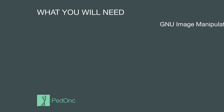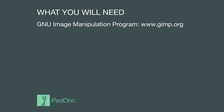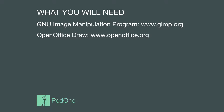We will be using the GNU Image Manipulation Program, which can be downloaded from www.gimp.org. We will also be using OpenOffice Draw, which can be downloaded from www.openoffice.org. OpenOffice Draw is part of the OpenOffice suite of programs. We'll be using ImageJ, which we haven't used in the previous sessions. ImageJ can be downloaded from http://rsbweb.nih.gov/ij. If you already have these programs installed on your computer, you should not need to install any additional software for this session.